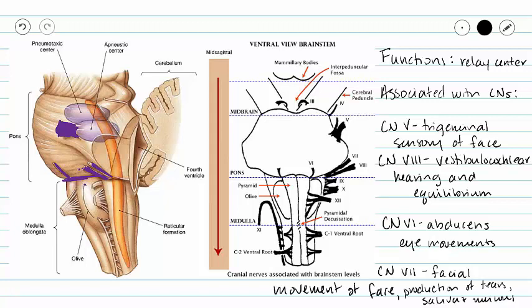So cranial nerves five, six, seven and eight are associated with the pons.